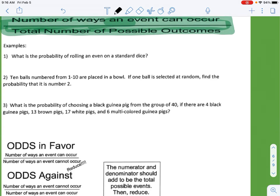The question is, what is the probability of rolling an even on a standard dice? The numbers on a dice are 1 through 6. If we write those out: 1, 2, 3, 4, 5, 6.